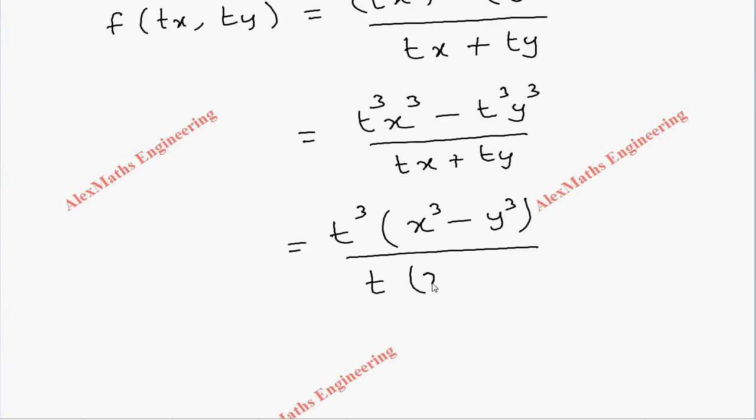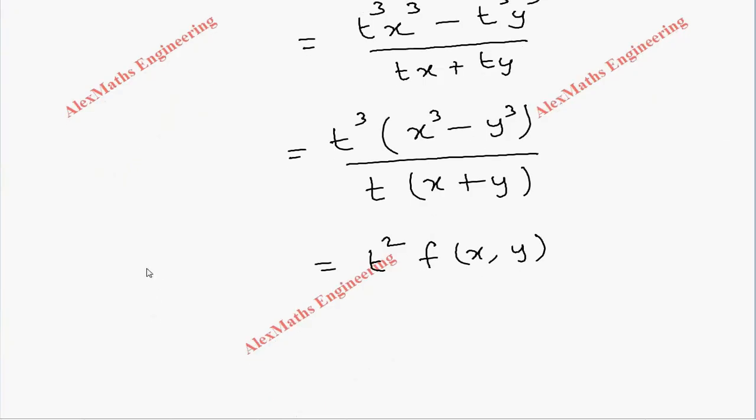Then t³ divided by t is nothing but t², and the remaining part is nothing but our function f(x, y). So f(tx, ty) = t²f(x, y). From this we understand that it is a homogeneous function of degree 2.